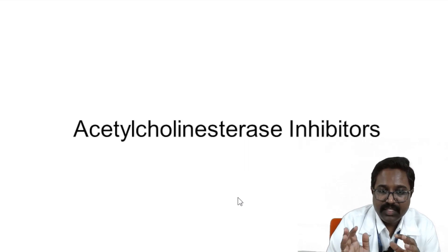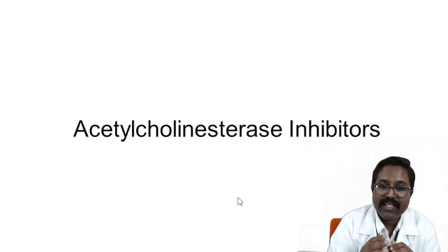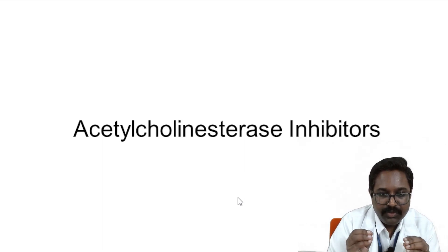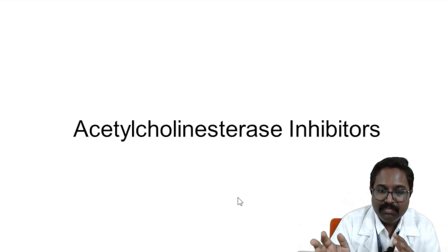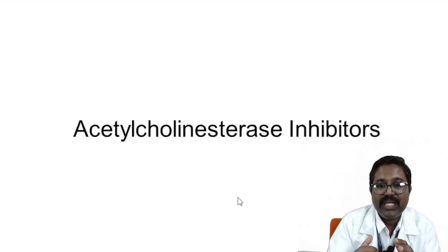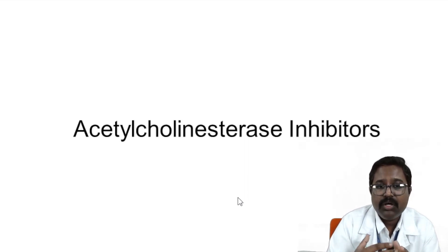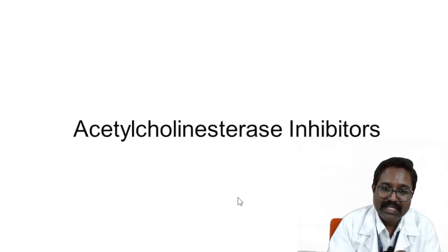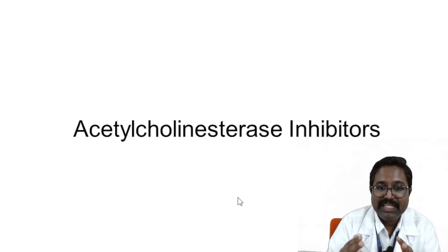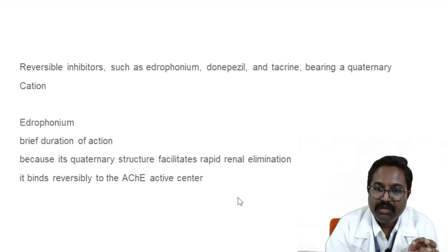Now moving to indirect-acting cholinergic drugs, also called acetylcholinesterase inhibitors. Directly acting cholinergic drugs act similar to acetylcholine. Acetylcholine is degraded by acetylcholinesterases. When you give an acetylcholinesterase inhibitor, enzyme activity is decreased, acetylcholine levels remain higher in the body for a prolonged duration. Direct cholinergic drugs act directly on muscarinic receptors; indirect acting cholinergic drugs inhibit acetylcholinesterase enzyme activity, preventing breakdown of acetylcholine and increasing its concentration in the body.